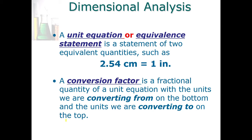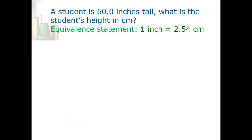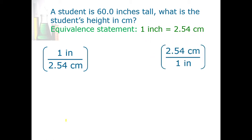Let's go back to our example. Your little sister is five feet tall, which is 60.0 inches. What would that be in centimeters? We need an equivalence statement: one inch equals 2.54 centimeters. Notice that I can establish two different conversion factors from this: one inch over 2.54 centimeters, or 2.54 centimeters over one inch. It's important that you keep the units with the values, otherwise it doesn't work. You cannot say one centimeter equals 2.54 inches — that's wrong. These two fractional quantities are what we call conversion factors.